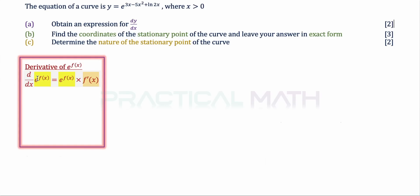If you are to differentiate e to the power of f(x), you copy down the original e to the power of f(x) multiplied by the differentiation result of the power, which gives us f prime of x. So differentiating e to the power of f(x) gives e to the power of f(x) multiplied by f prime of x, which is the differentiation result of the power.